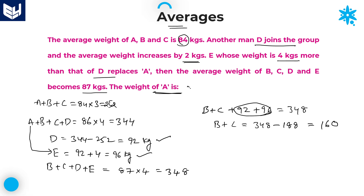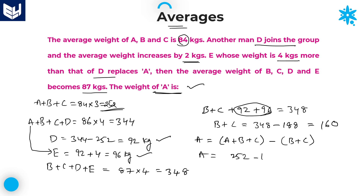We want the weight of A. The weight of A equals the total A plus B plus C minus B plus C. If you subtract the B plus C value from the total, you will get the weight of A. The total value we got initially is 252. So 252 minus 160 equals 92 kgs. That is the required answer for this question.